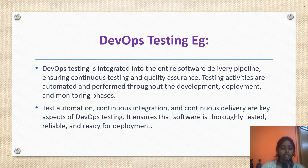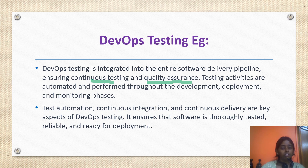Moving to DevOps testing examples: DevOps testing is integrated into the entire software delivery pipeline, ensuring continuous testing and quality assurance — particularly for QA engineering. Testing activities are automated and performed throughout the development, deployment and monitoring phases. Test automation, continuous integration and continuous delivery are key aspects of DevOps testing. It ensures that software is thoroughly tested, reliable and ready for deployment.